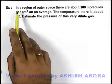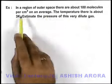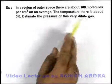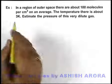In this example, we are given that in a region of outer space there are about 100 molecules per centimeter cube on an average, and the temperature there is about 3 Kelvin. We are required to estimate the pressure of this very dilute gas.